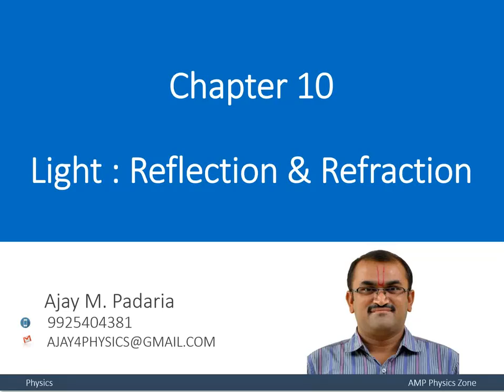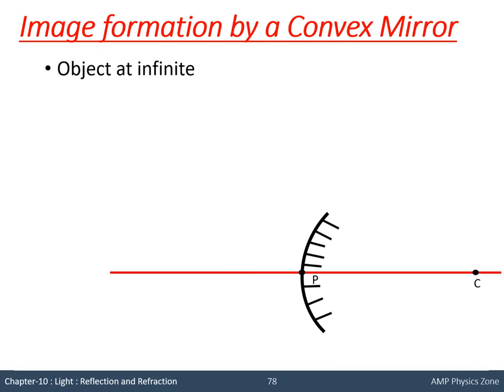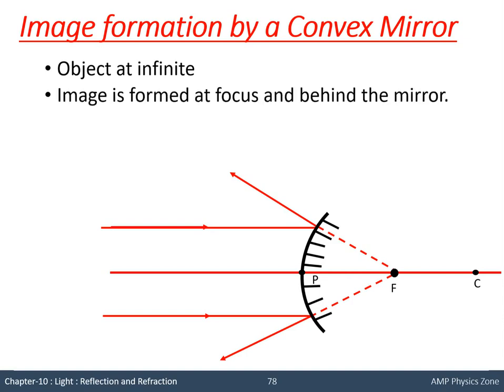Today we will see image formation by convex mirror and its uses. There are only two cases. The first one is when the object is at infinity. The convex mirror has a pole, center of curvature, and principal axis. Parallel rays to the principal axis after reflection will appear to diverge from the focus. Whenever the object is at infinity, the image will be produced at the principal focus behind the mirror.